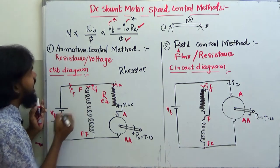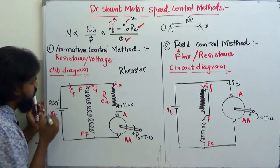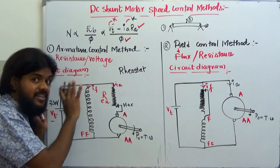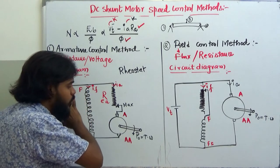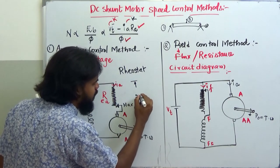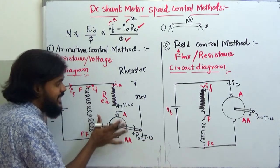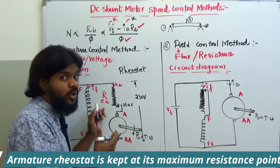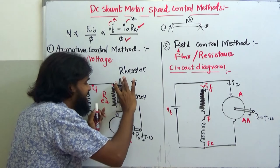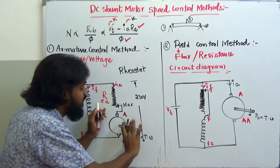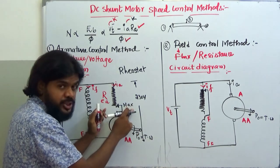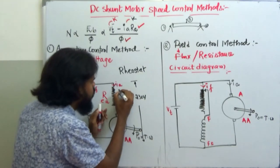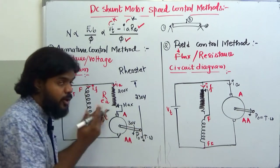Operating at rated supply voltage — say 230 V — the field flux is produced at its rated value. Since the armature rheostat is at maximum position, there is more voltage drop across the external armature resistance compared to the armature winding itself. For example, maybe 200 V drops across the external resistance and only 30 V appears across the armature.